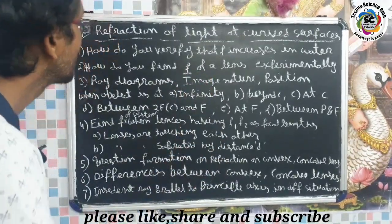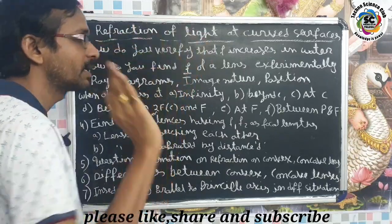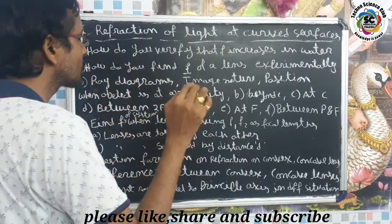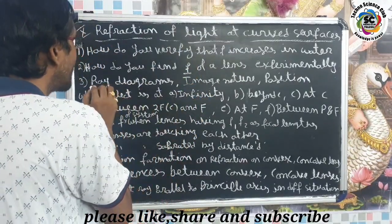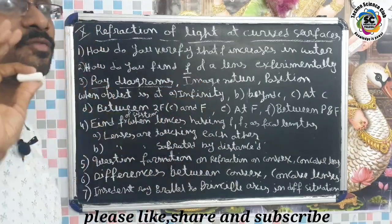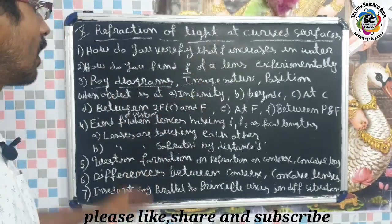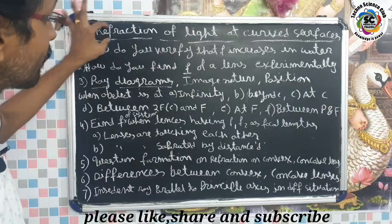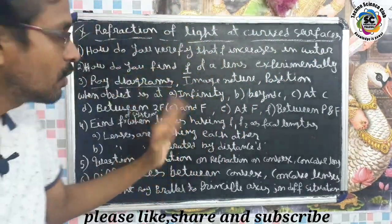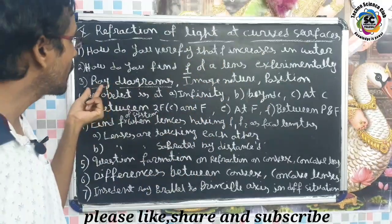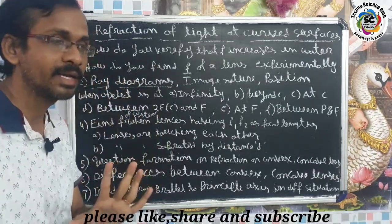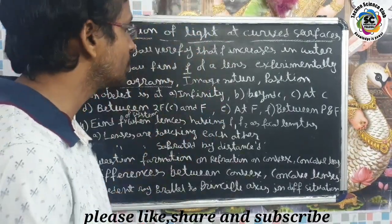Ray diagrams — this is the most important question with diagrams for eight marks and four marks. In this lesson on refraction of light at curved surfaces, very important ray diagrams are required. There are six ray diagrams in total.